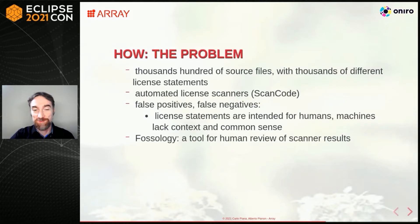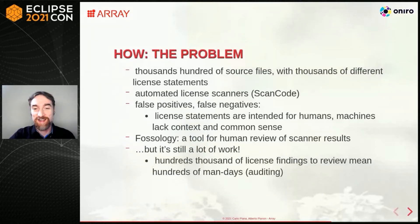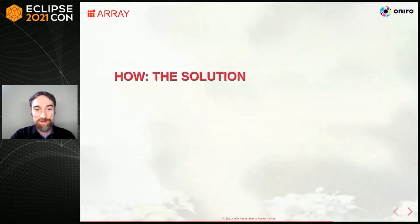Luckily, we have another excellent open source tool — FOSsology — that helps us review the findings of license scanners to validate or correct them. But even with FOSsology, we realized this would still require hundreds of man-hours per project release for a project the size of Onero. Moreover, every operating system is expected to grow over time, so maintaining compliance this way would require a continuous significant workload. That's why we asked ourselves: could we find another way to keep the automated scanners plus human review approach while keeping the workload low? We thought: let's do it the open source way — one of the good things about open source is that you can reuse others' work.